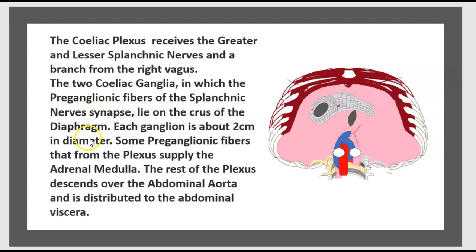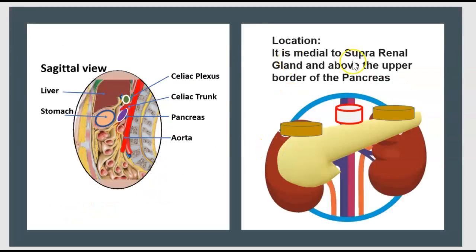Each ganglion is about 2 cm in diameter. Some pre-ganglionic fibers from the plexus supply the adrenal medulla. The rest of the plexus descends over the abdominal aorta and distributes to the abdominal viscera. In terms of location, the celiac plexus is medial to the suprarenal gland and above the upper border of the pancreas.